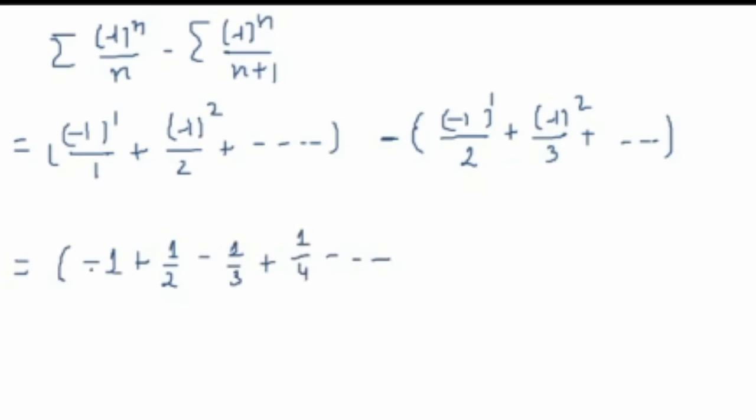This is equal to, according to the question, this has to be equal to minus of log 2, because you can take a minus common from here. You will get one minus one by two plus one by three and so on. So this is minus log 2 and here this is nothing but log 2 minus one.